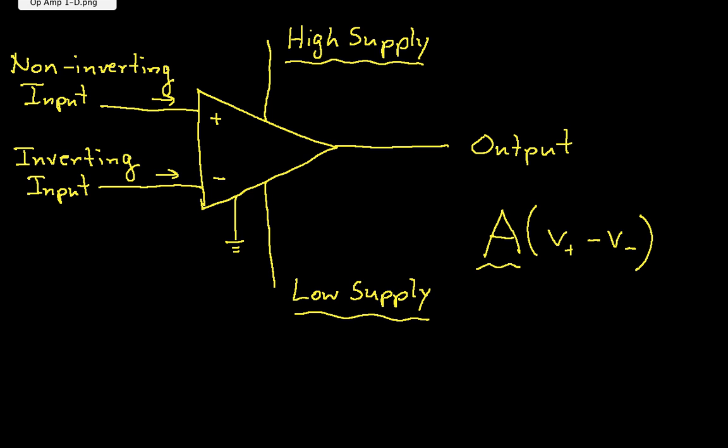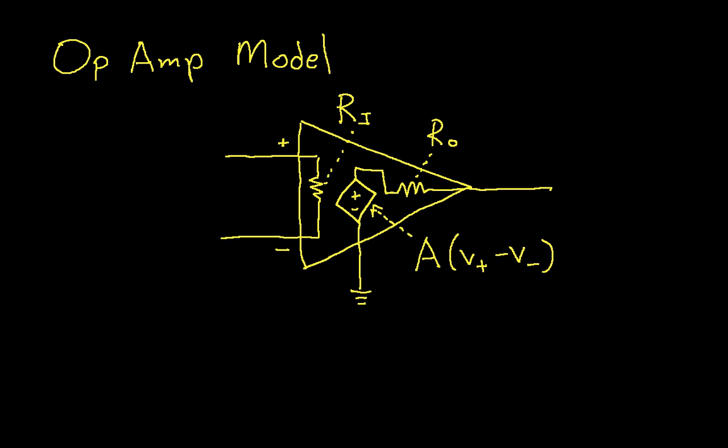A more detailed model of an op-amp is the following. The plus sign, this guy here, is the non-inverting input. This is the inverting input. They're connected together by a resistor, and the resistor is called the input resistance. Again, typically this input resistance is pretty big.